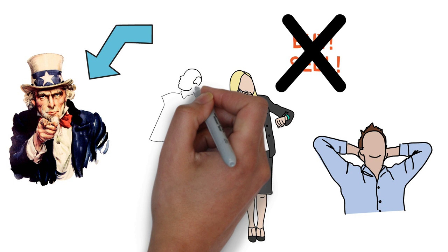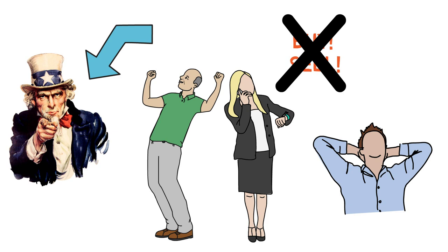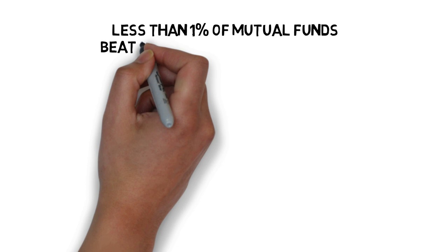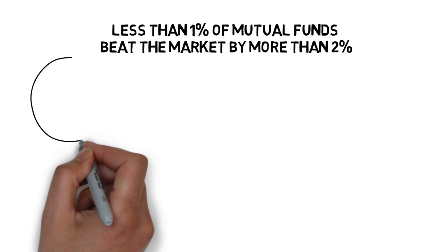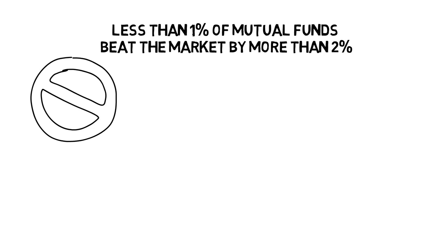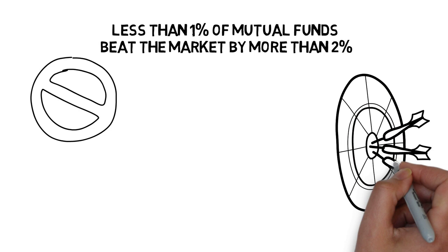Index funds require just enough management to match the index, so they rarely have to pay taxes the way an actively managed mutual fund does. Over a 35-year period, less than 1% of funds were able to beat the market by more than 2%, which is a small amount. If you have only a 1% chance of beating the market by any noticeable amount, is it really a wise choice to bet on those odds?